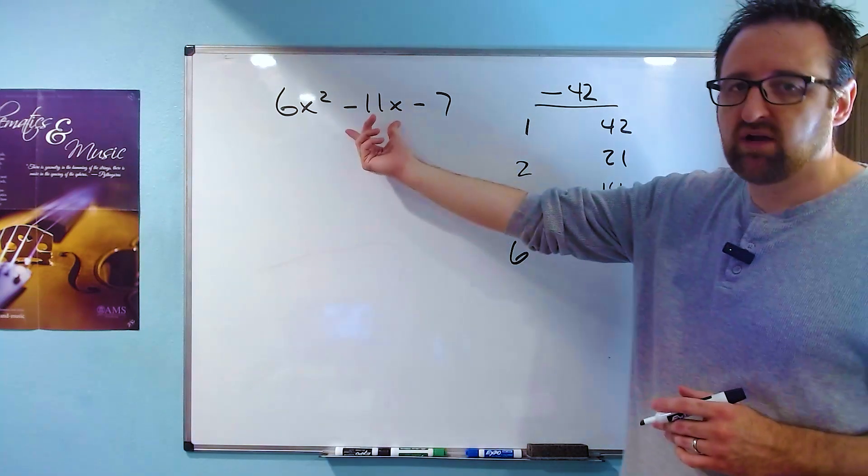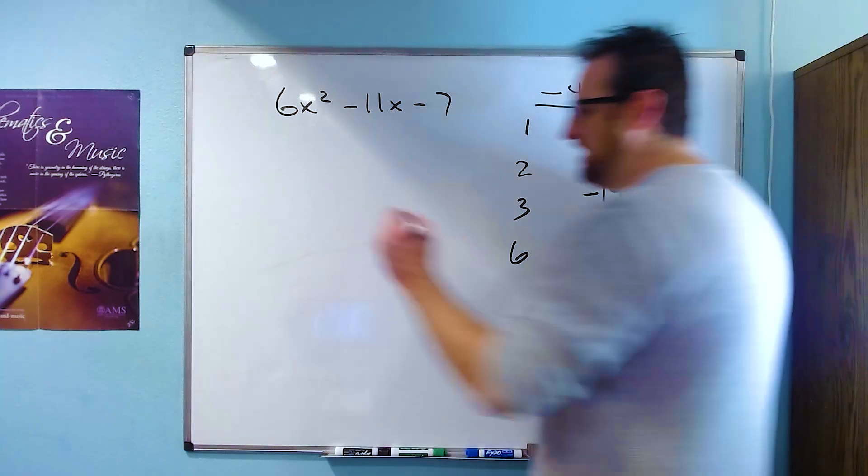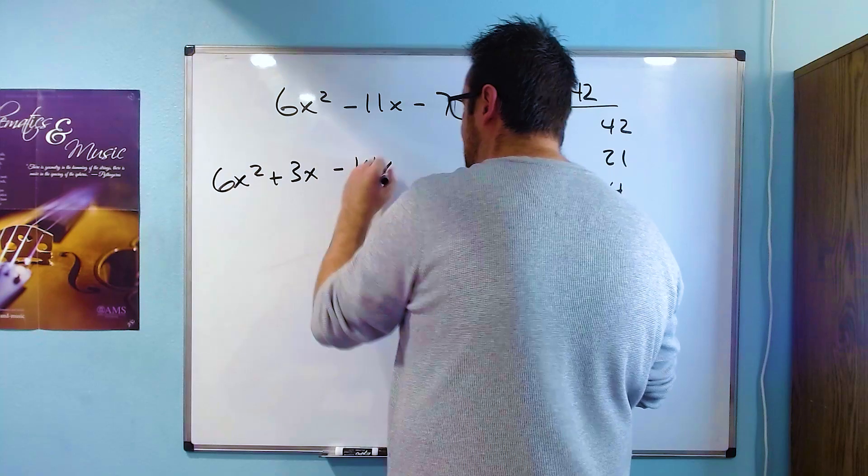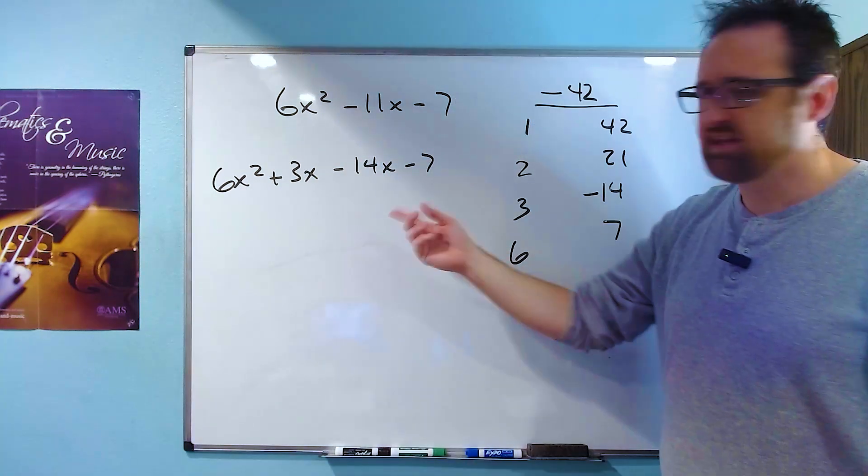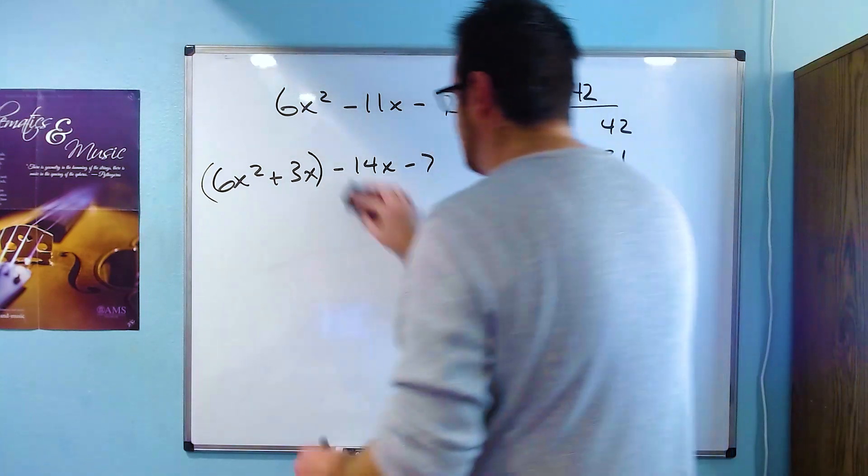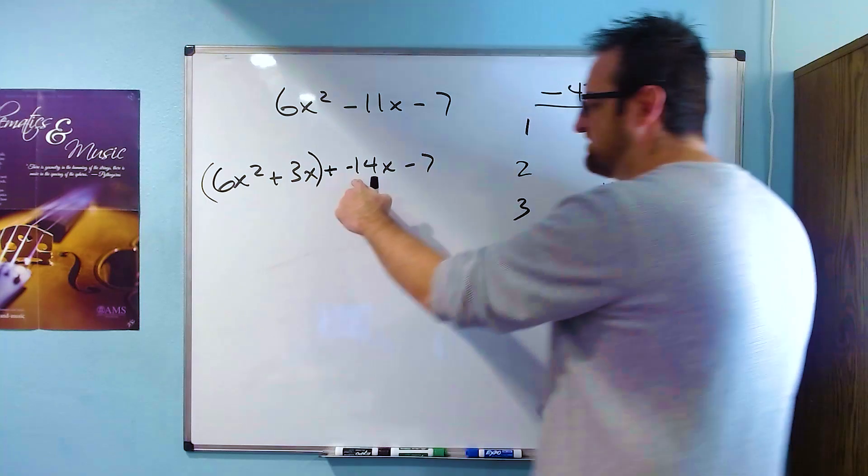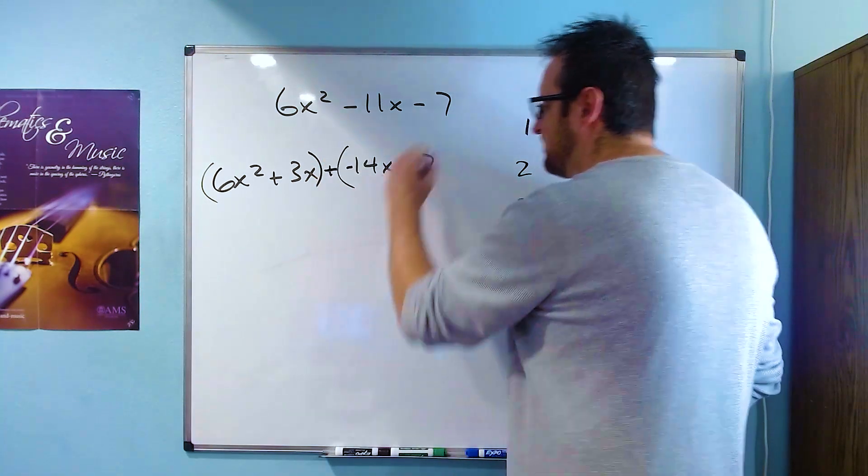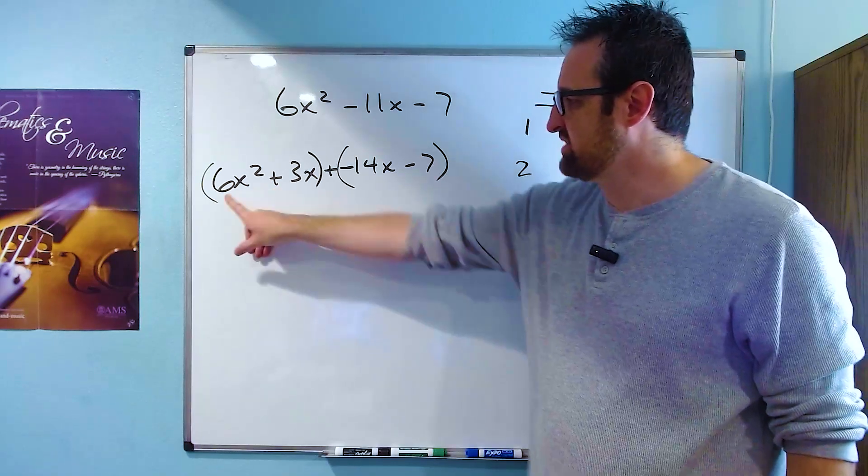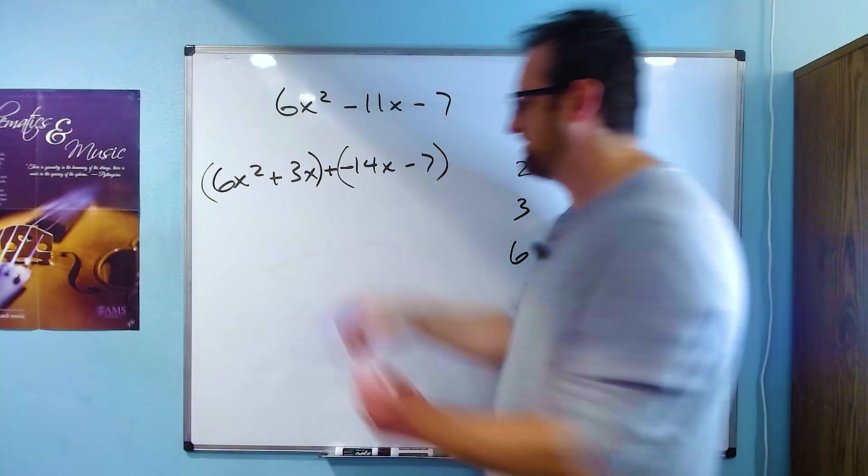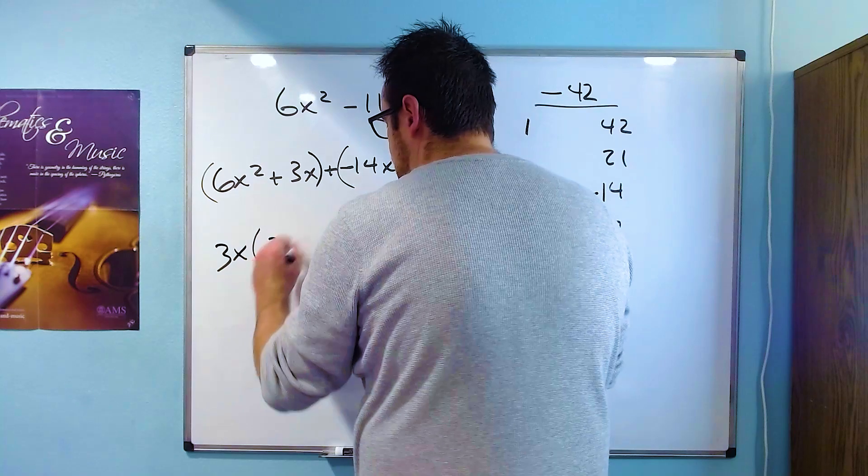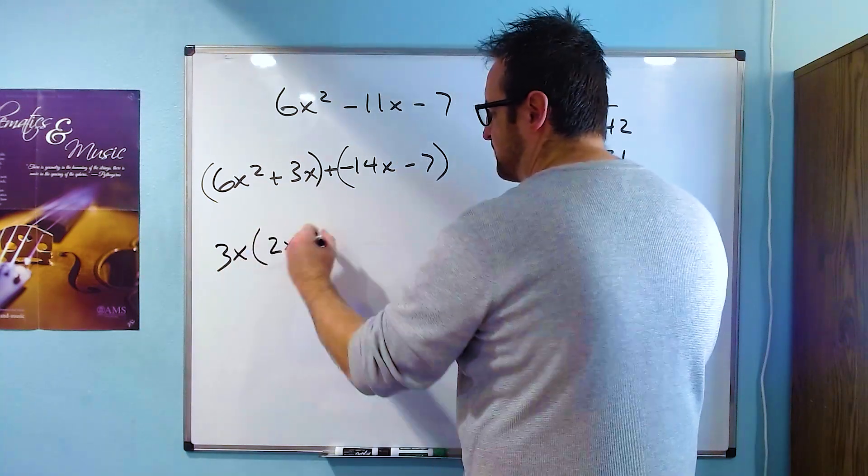So at this point, we're going to rewrite the negative 11x in terms of these factors here. And we get 6x squared plus 3x minus 14x minus 7. And at this point, we'll factor by grouping. Both of these terms have a 3 in the coefficient and an x. So we'll factor that out as a 3x. 6x squared divided by 3x produces a 2x. And 3x divided by 3x is a 1.